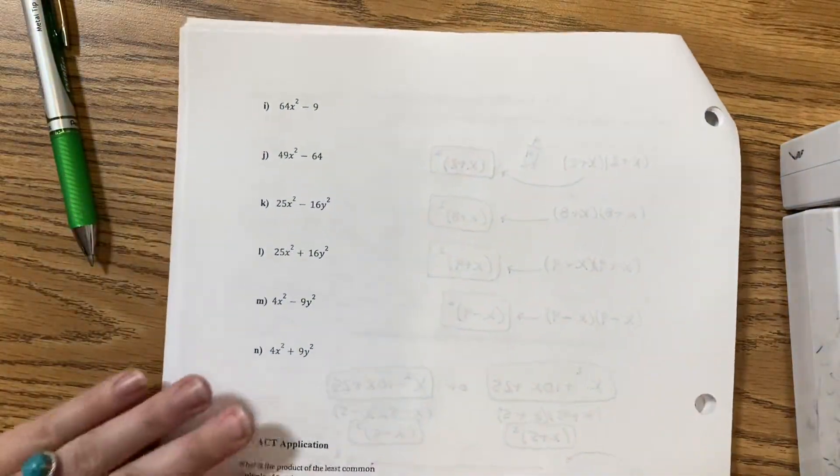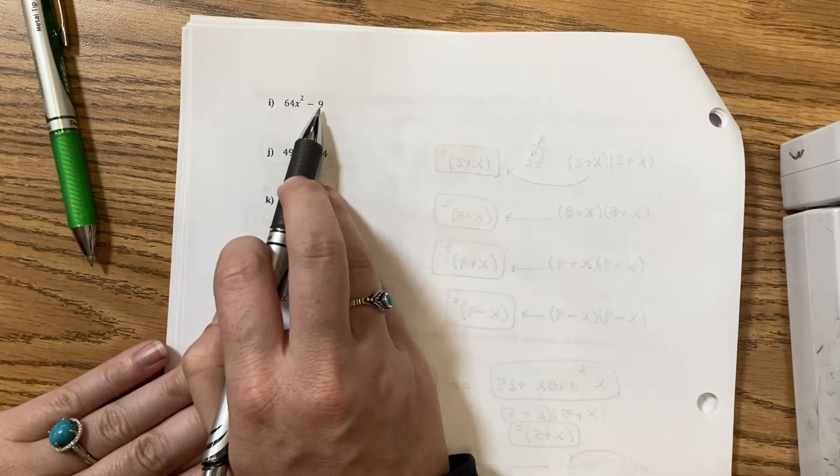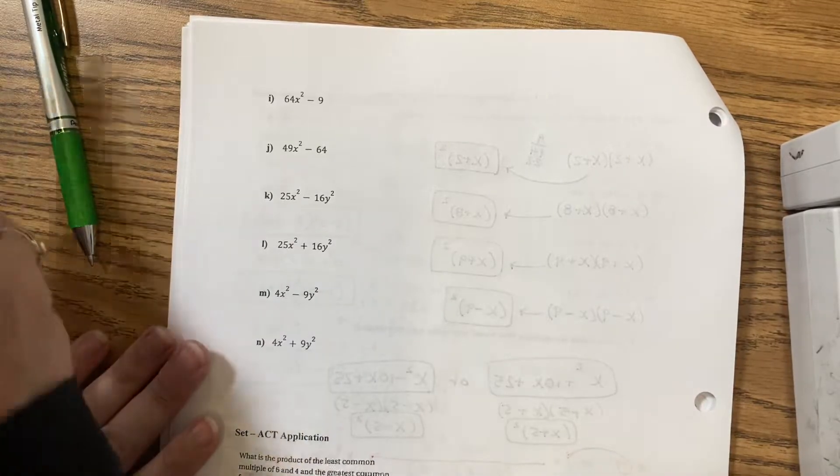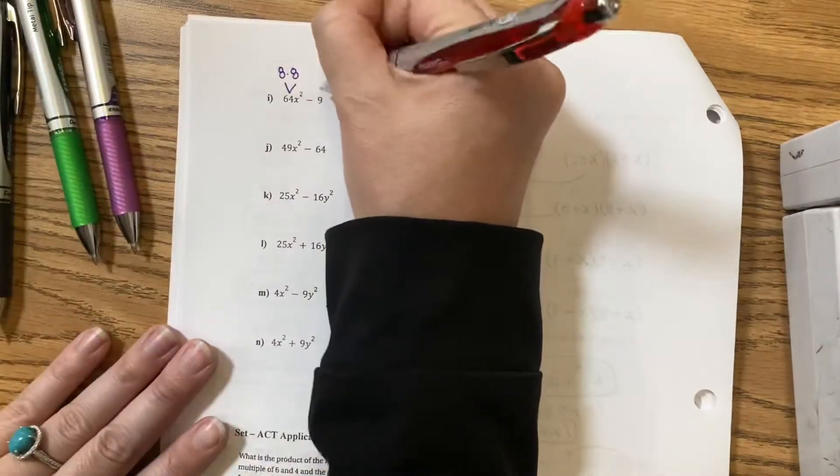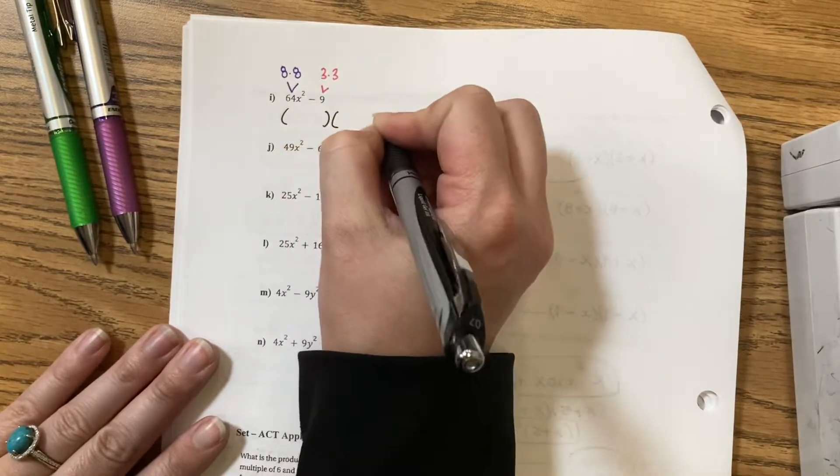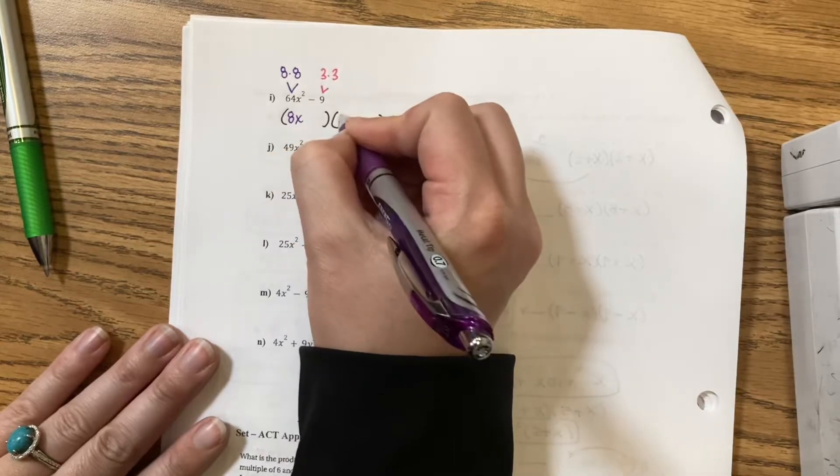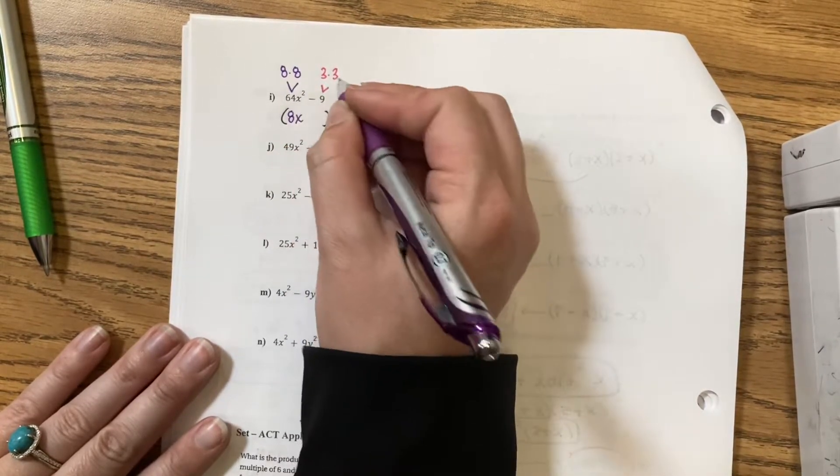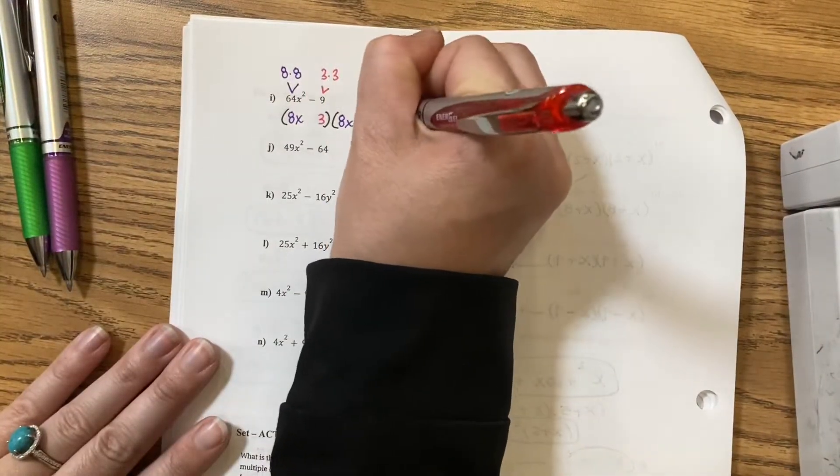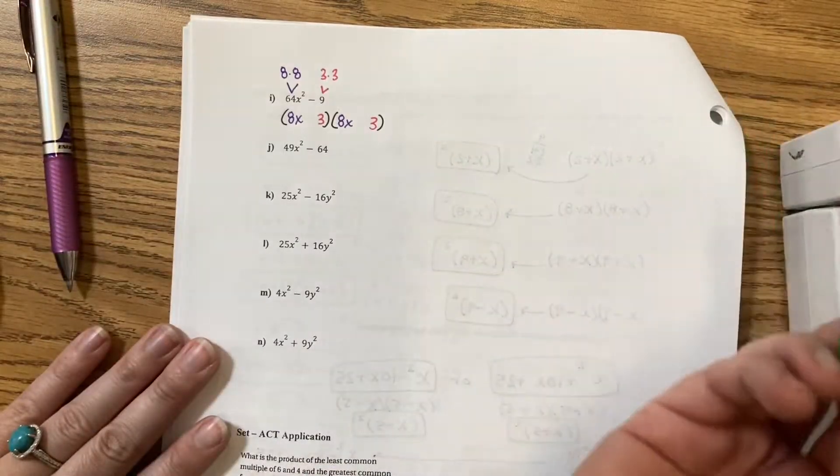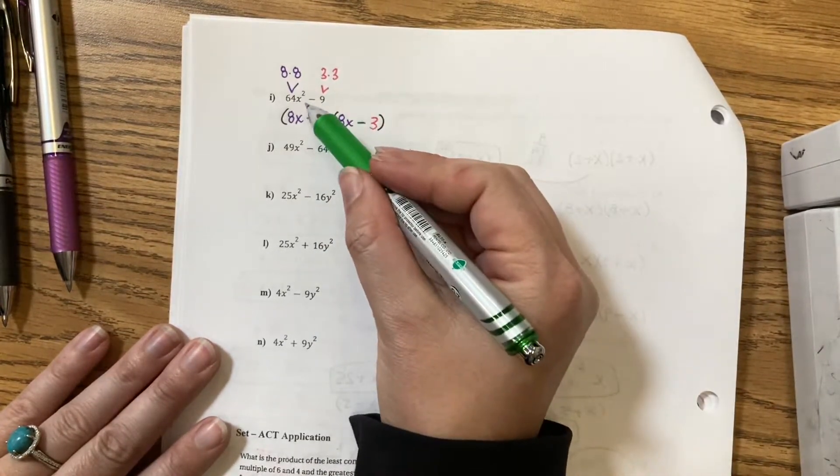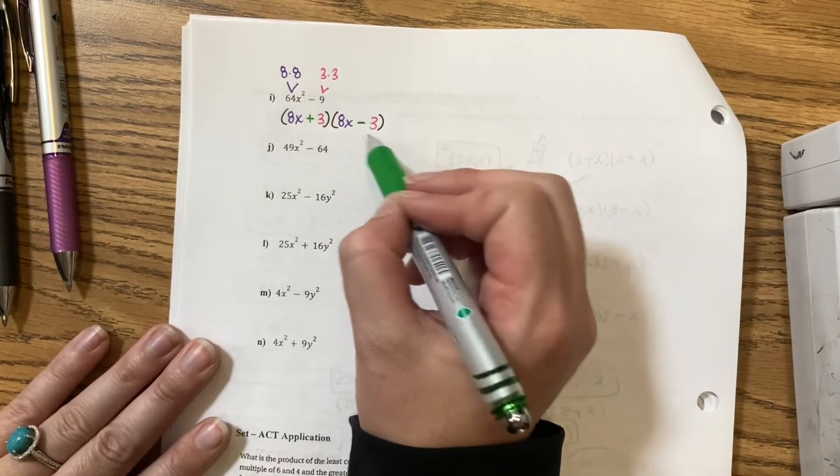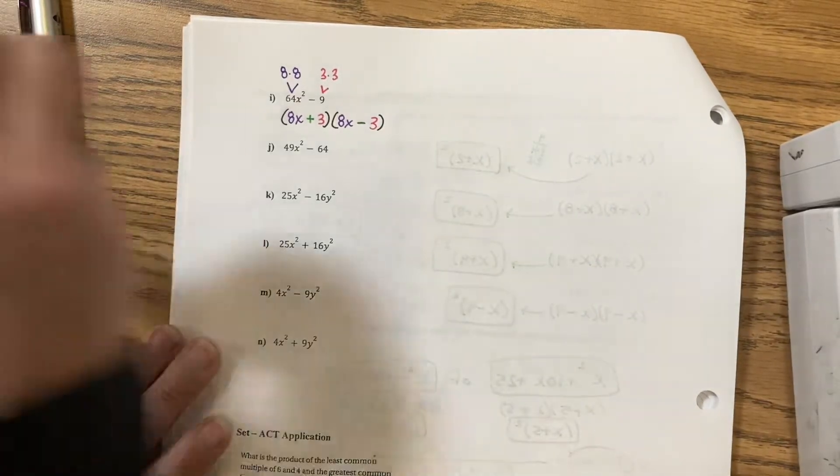Next question. We have 64x squared minus 9. So, our question is, are these perfect squares? 64 is 8 times 8. 9 is 3 times 3. So, when we factor it, we will get 8x and 8x for the front to get x squared. 3 and 3 will go in the back. And then, to get no middle term, this is tricky, there's no middle term. I need a plus version and a minus so that they cancel out the middle. So, I cannot write this as squared because I have different values or different signs.